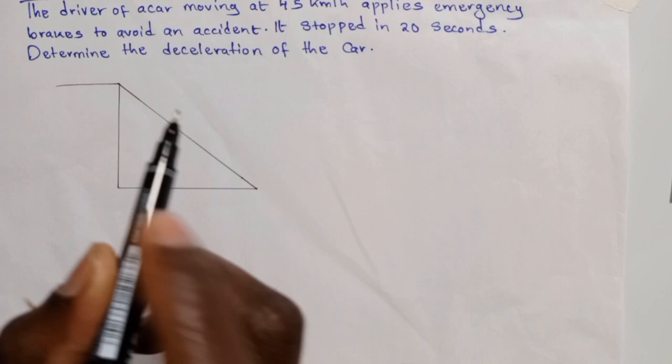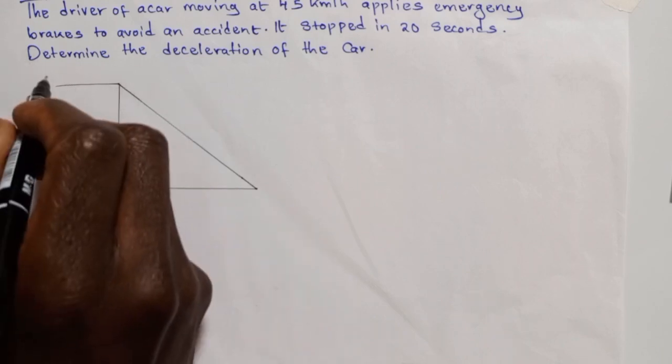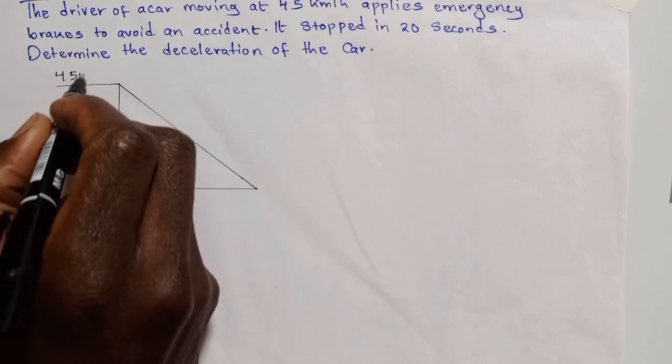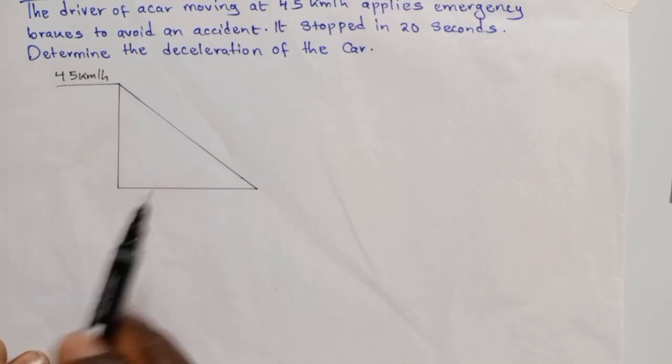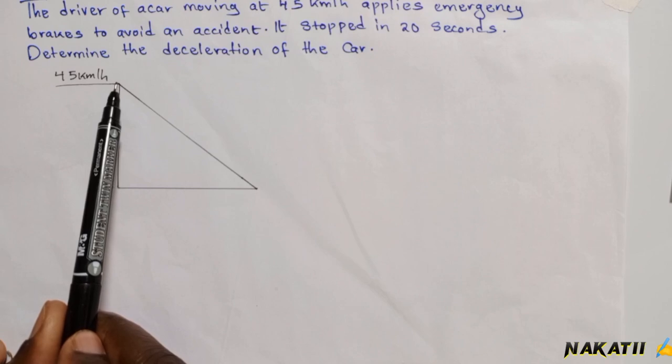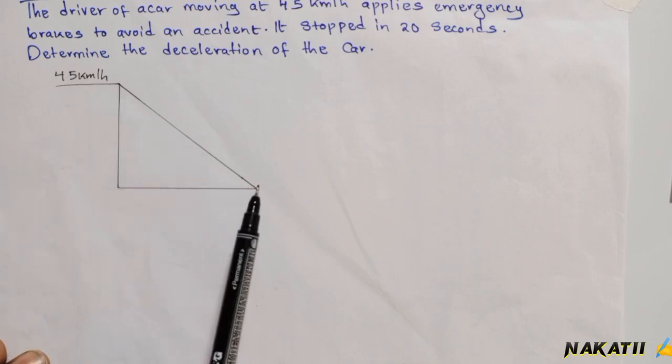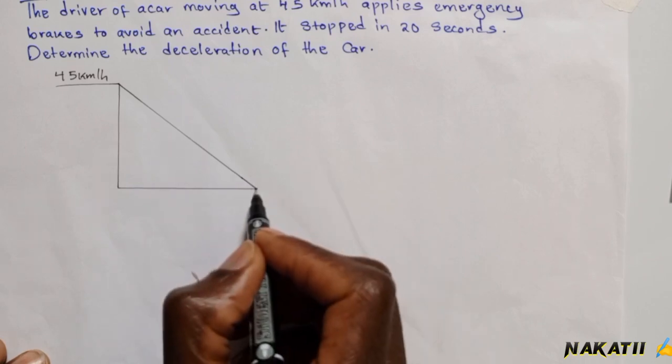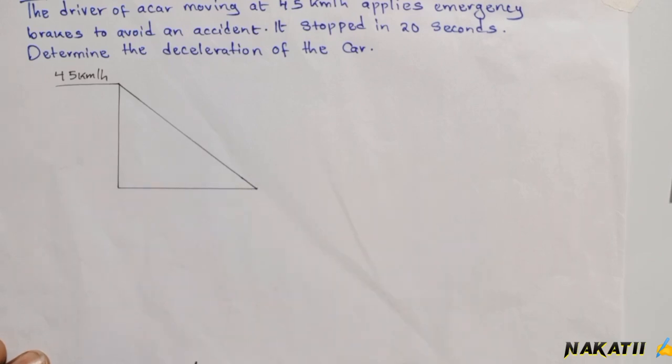...using a certain velocity or speed which is 45 kilometers per hour. Then he applies brakes at this point and starts decelerating until the car stops. The car stops at this point, therefore...